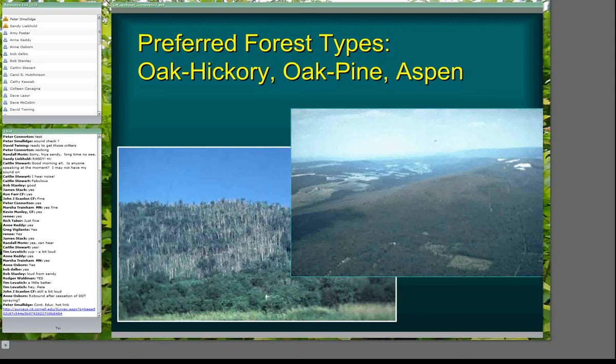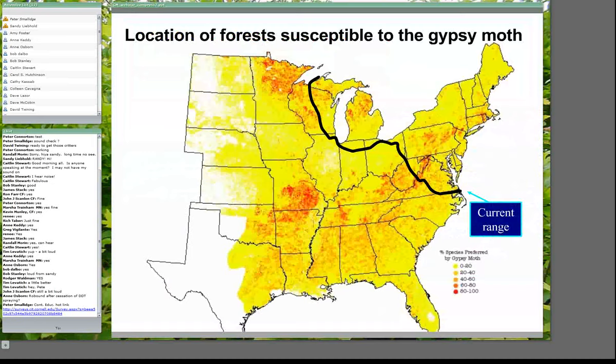In more northern latitudes, aspen stands can also experience gypsy moth outbreaks. A rule of thumb is that you really won't get a gypsy moth outbreak developing unless you have at least 20 percent of the basal area composed of preferred species like oaks and aspen. This map shows the distribution of susceptible forest types in the U.S. The black line represents essentially where the gypsy moth distribution has spread so far from its introduction site near Boston. You can see it really hasn't gotten to some of the really good places yet, like the Ozarks, so there's no doubt going to be a lot of interesting things to come.